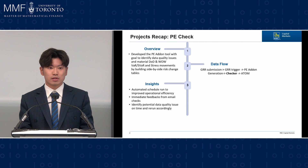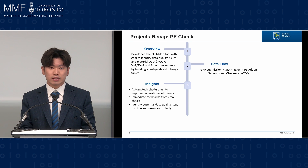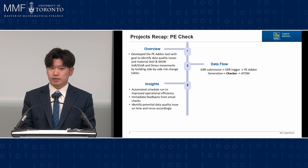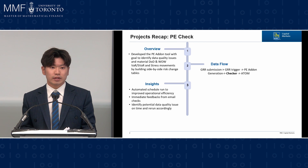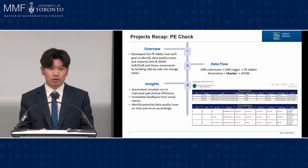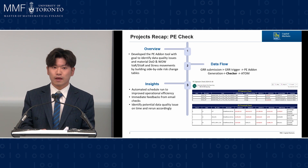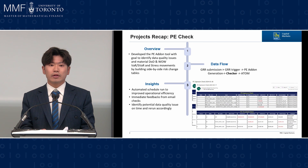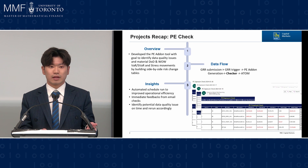Speaking of the insights about this project, the automated scheduled run greatly improved the operational efficiency by receiving immediate feedback from emails. I've attached several screenshots to show what this PE Check looks like. On the last column, you can see comments saying either 'exposure dropped' or 'exposure added' to draw people's attention. And if everything's good, then the PE Check table is just empty, indicating that everything's good.